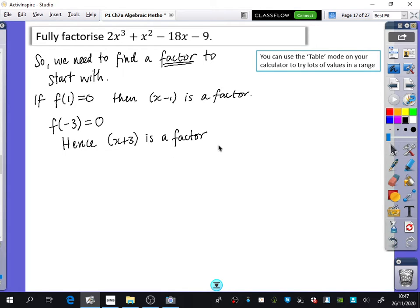So now we know that x plus 3 is a factor. I want to fully factorize it. So I'm going to take this expression, and I'm going to divide it by x plus 3. So that is 2x cubed plus x squared minus 18x minus 9. And I'm going to divide it by x plus 3.